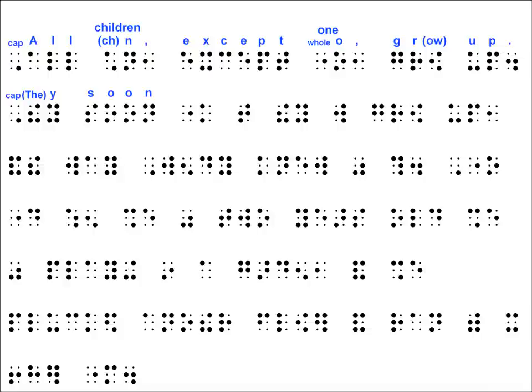The next word is another two-cell whole word contraction starting with dot five raised. The second cell is K, the second cell down in the A column. From our two-cell whole word contraction memory aid — 'My father is here, and he knows the Lord and Mother Mary's name' — this must be the word 'know.' Next is the T cell all by itself. From our memory aid — 'you and I can have more knowledge so that' — the T cell by itself represents the word 'that.'